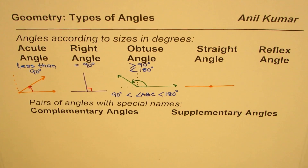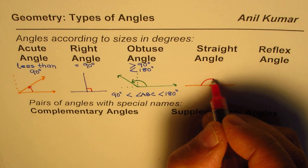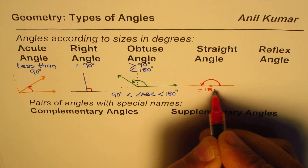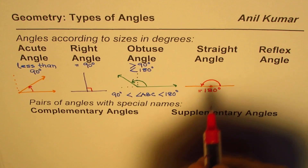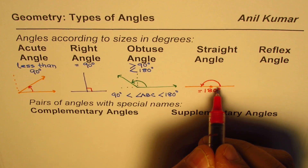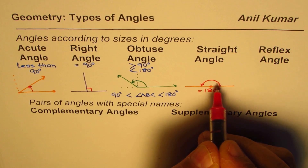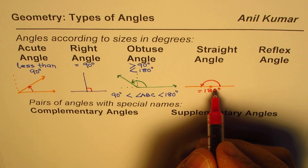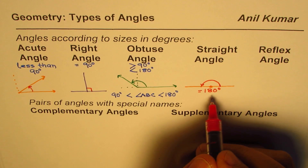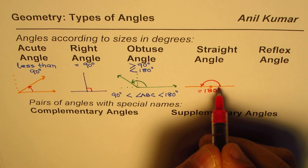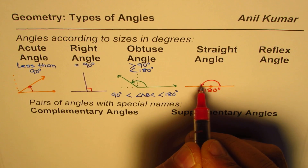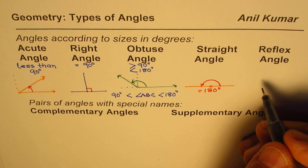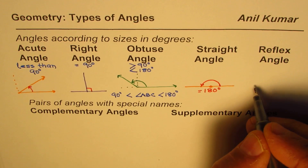Straight angles, as the name suggests, are formed by straight lines. A straight angle is always equal to 180 degrees. Normally when we are measuring angles we measure counterclockwise. Sometimes we talk about negative and positive angles — counterclockwise is considered positive and clockwise is negative.